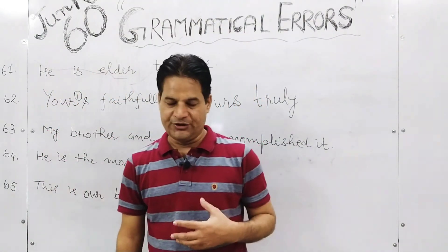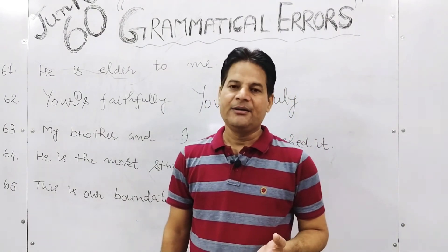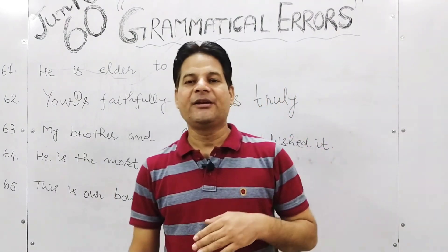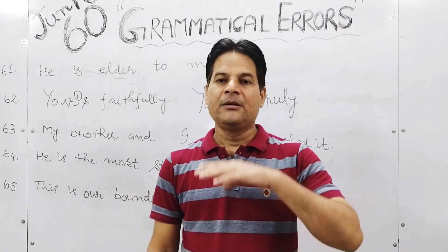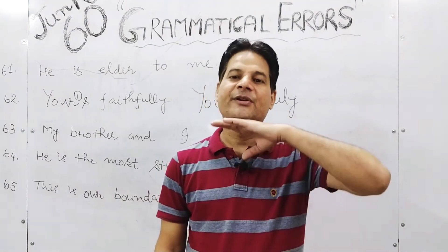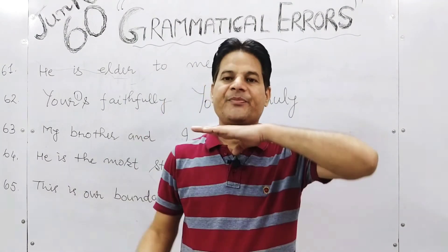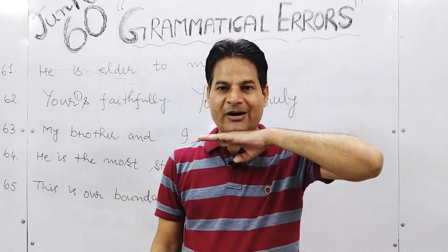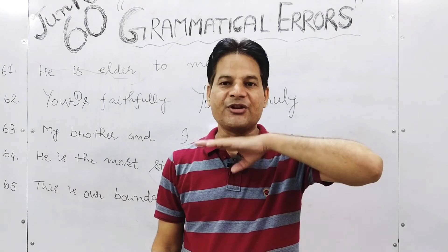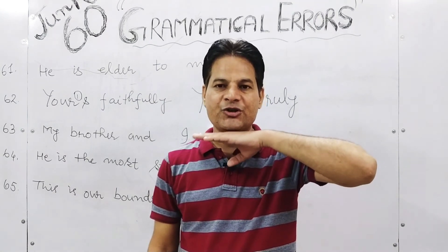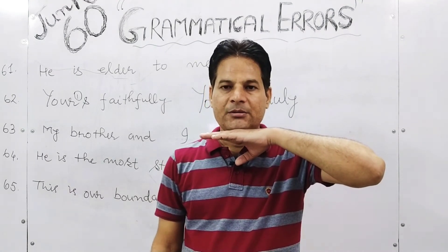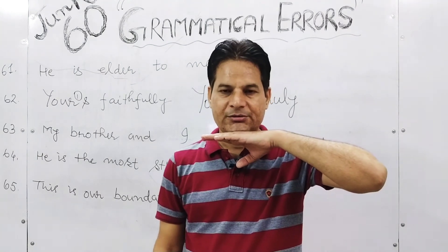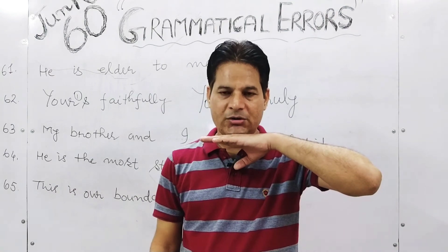To understand when to use 'most' versus 'EST,' we count syllables. If a word has one syllable we can add ER or EST. How do you count syllables? Put your hand under your chin and each time your chin drops for a vowel sound, that is one syllable. Try it with 'strong' — say 'strong': your chin drops once. So 'strong' is one syllable, and one-syllable words can take ER and EST.